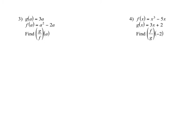Okay so first thing we're going to look at is number three. So on number three we want to take g of a and divide it by f of a. So g is going to go on top of the fraction, f is going to go on the bottom. So g is 3a on the top and on the bottom I have a squared minus 2a.